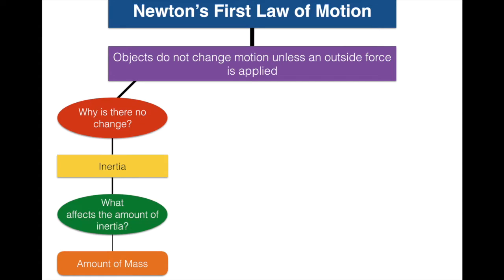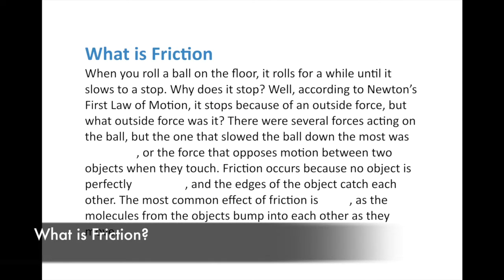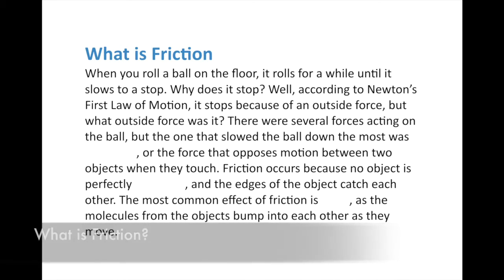Objects don't change motion unless an outside force is applied — because of inertia. The amount of inertia is affected by the amount of mass: the more mass, the more inertia. The less mass, the less inertia, which means it's easier for an outside force to change its state of motion. The concept related to Newton's first law that we talk about a lot is friction.